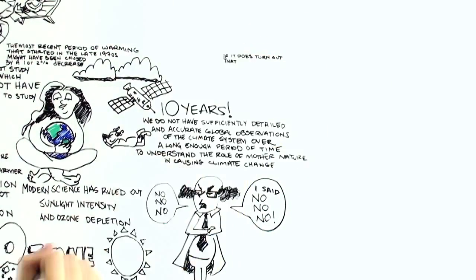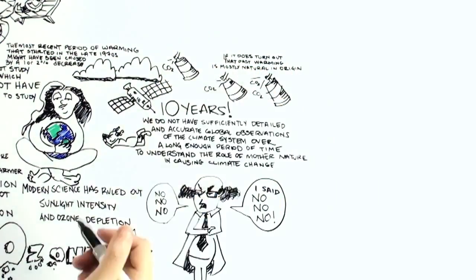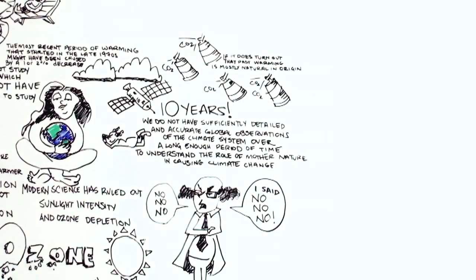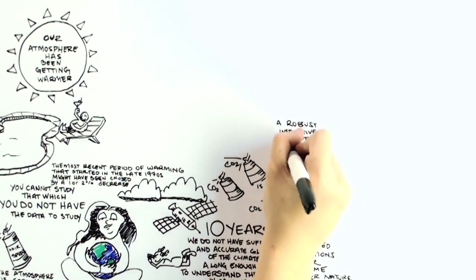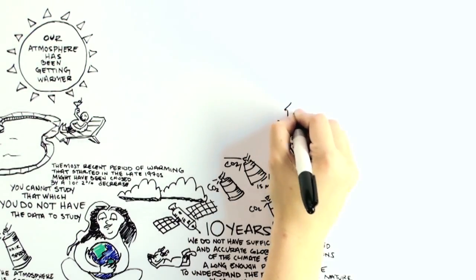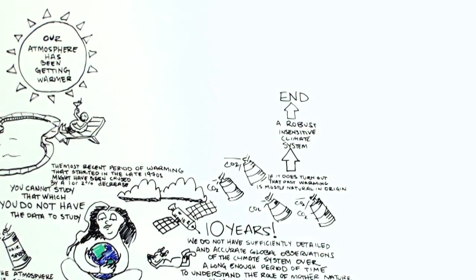Now, if it does turn out that past warming is mostly natural in origin, then it takes a much stronger push to cause warming than just an increase in CO2 levels, which indicates a robust, insensitive climate system. In that case, the natural warming can be expected to end at some point, and little additional warming from our greenhouse gas emissions would then be expected later.